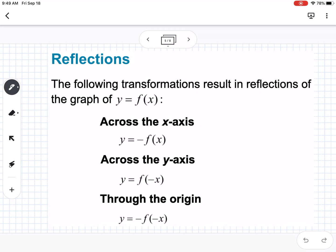Okay, so reflections. So across the x-axis, you're going to have a negative outside. If it's across the y-axis, you're going to have a negative inside the parentheses with the x. And then if you had a reflection over the x and the y, we call that through the origin. So you'd have a negative on the outside and the inside.